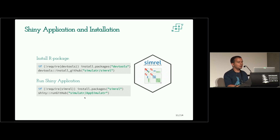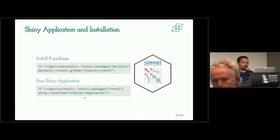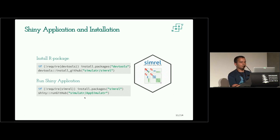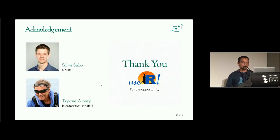To download the package: the multiple response variation is not yet on CRAN, but the original version that simulates one-response models is available on CRAN. You can also download it from GitHub and run the Shiny app directly from GitHub. Thank you everyone, and thank you to the useR community for this opportunity. My supervisors helped me a great deal in creating this package.